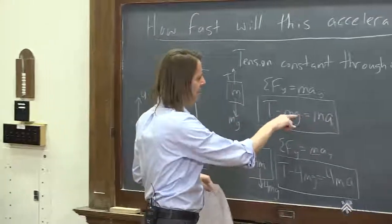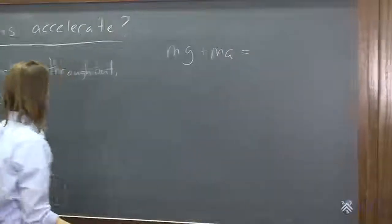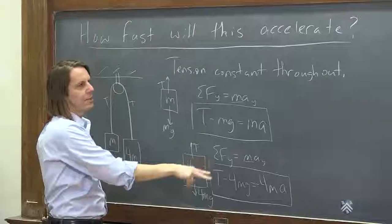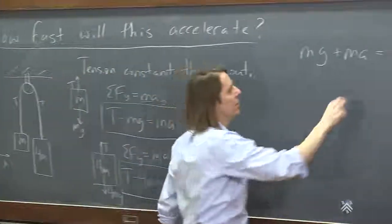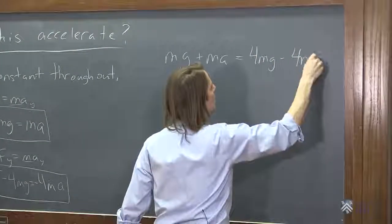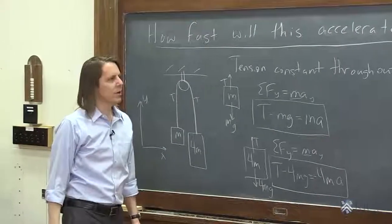All right, so we could say MG plus MA. This tension equals 4MG minus 4MA. All right, and that all looks correct.